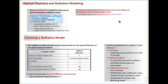Before selecting a radiation model, you need to determine your optical thickness. Optical thickness is calculated using the equation where 'a' is the absorption coefficient, sigma is the scattering coefficient, and 'l' is the mean beam length. You must do this exercise first and then find the optical thickness. Based on that, you can decide which radiation model performs better. The surface-to-surface (S2S) model performs best when optical thickness is 0.